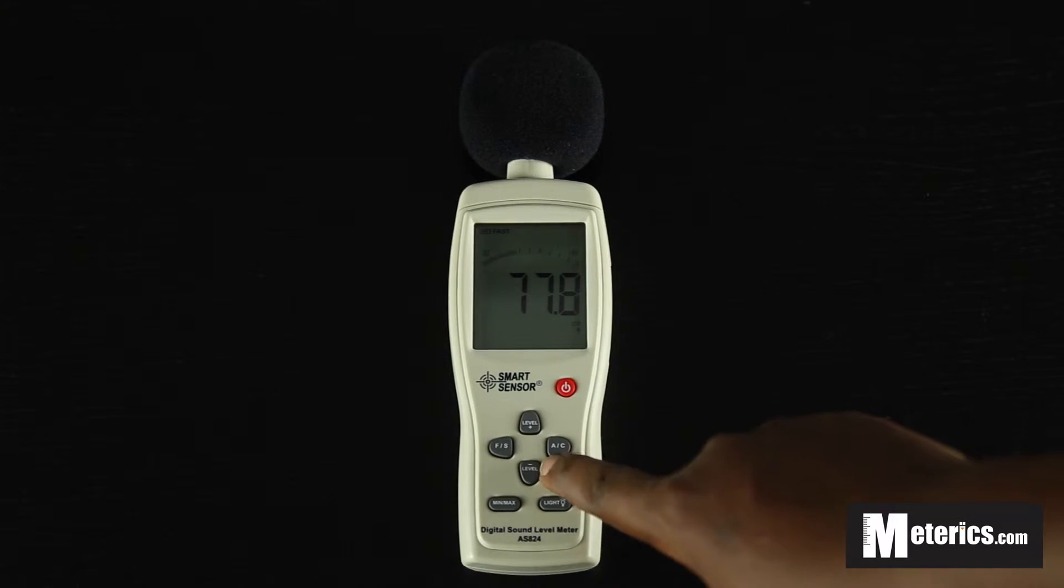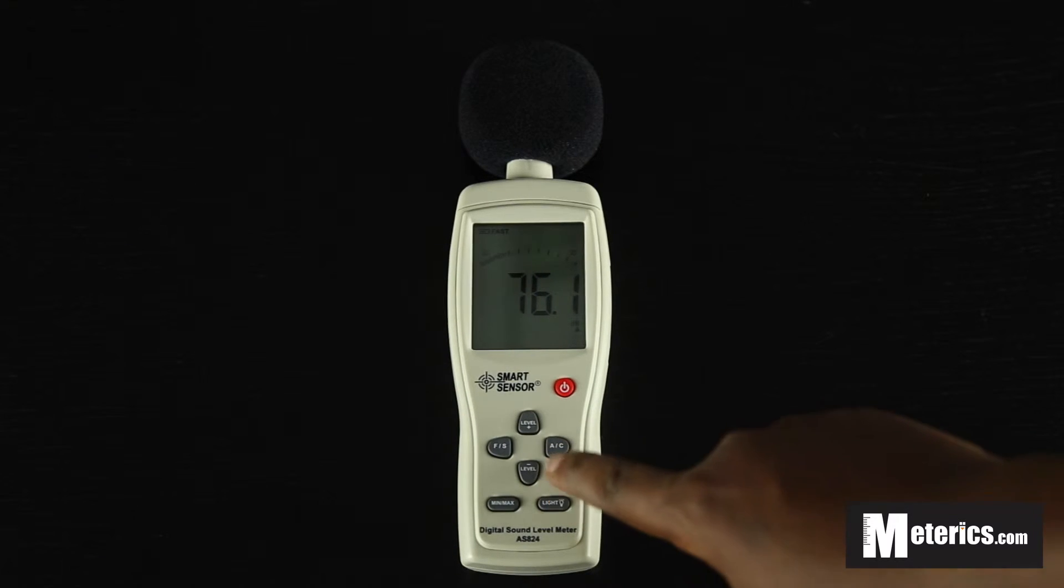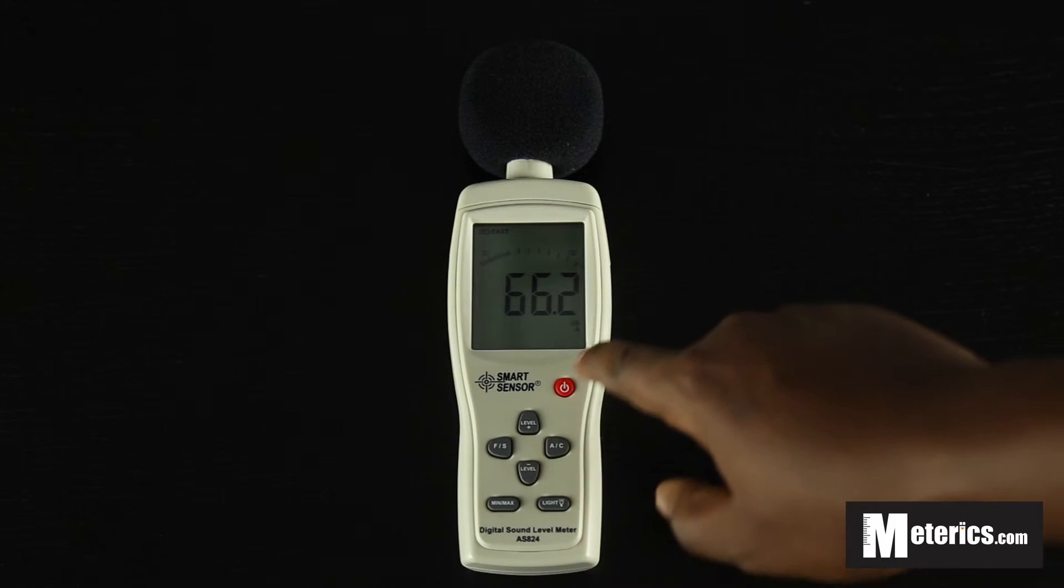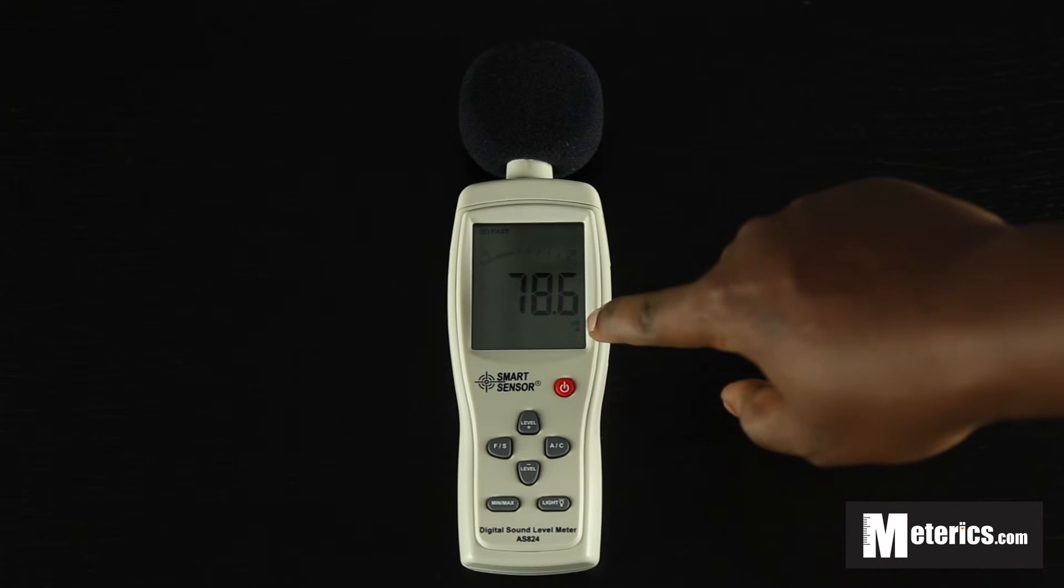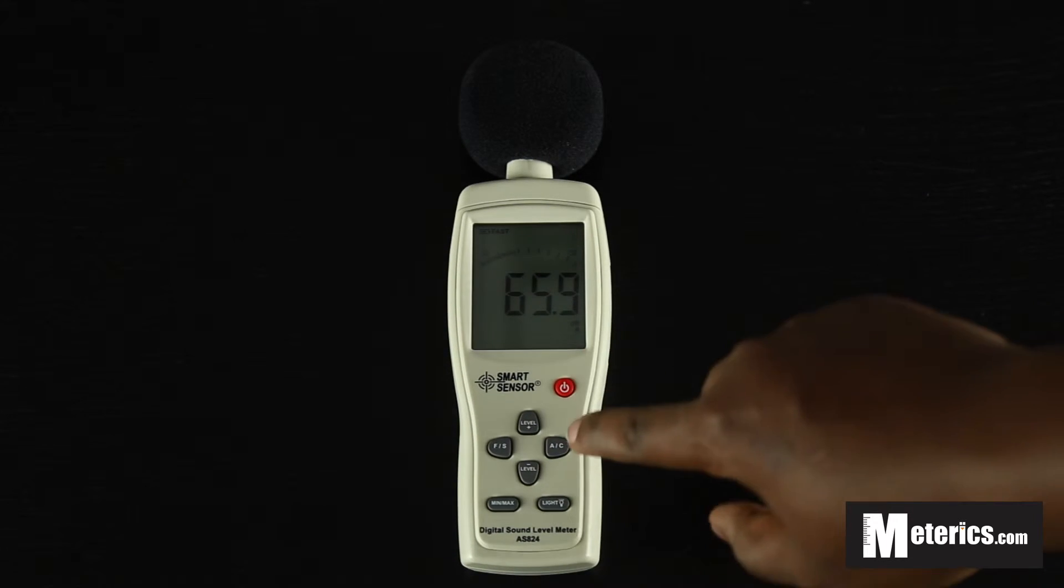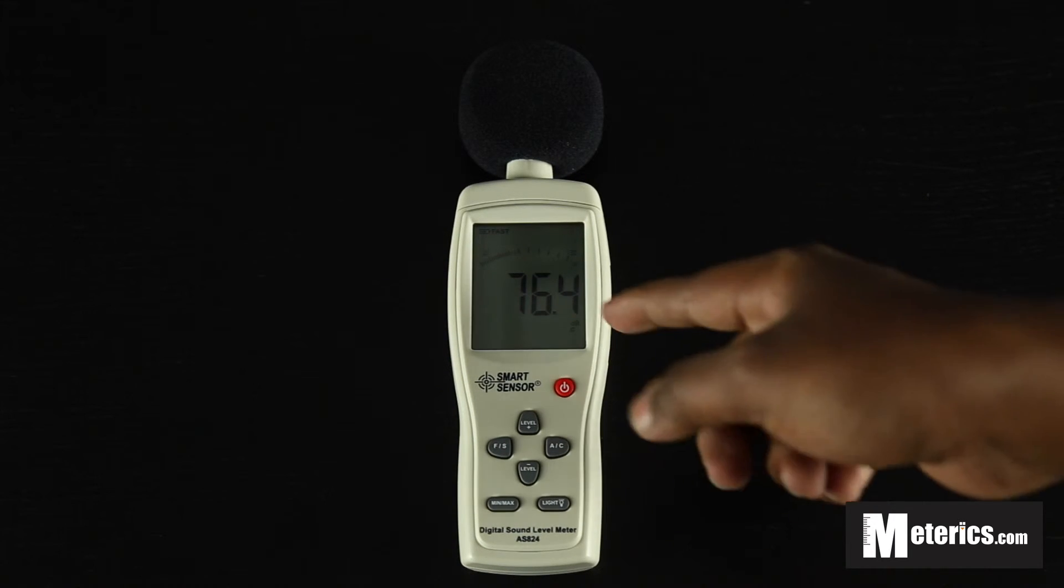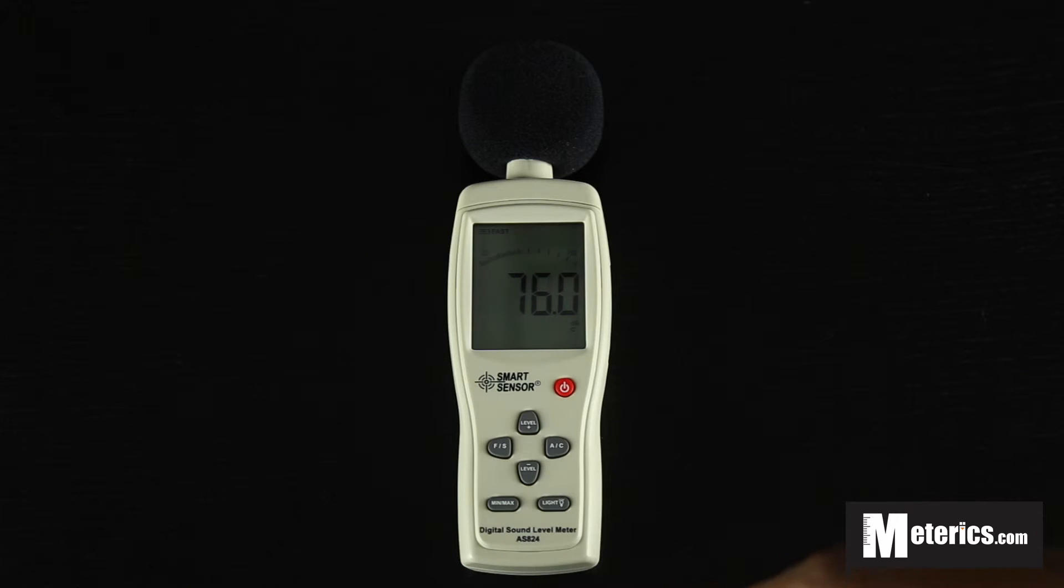Next to here we have the A and C button. What these do is they give you the option of choosing what frequency you are using. Currently we are on A so we can see we have a dBA indicator here. And if we push that we get to C, so it just lets you know that we are now dealing with the C frequencies.